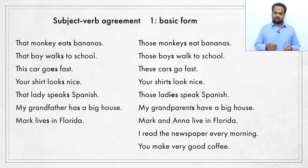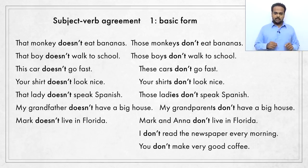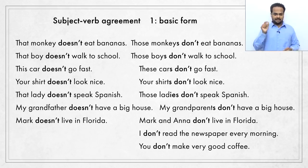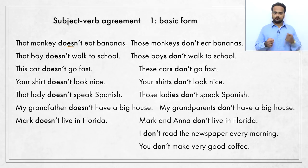The basic subject-verb agreement rule also applies to negative forms. We say 'that monkey does not eat bananas' or 'doesn't eat bananas,' and 'those monkeys do not' or 'don't eat bananas.' It's important to note that we say 'does not eat' — not 'does not eats' — because the S is already added to the helping verb 'do,' so there's no need to add it again to the main verb. Remember: to make negative sentences, use 'does not' with singular subjects and 'do not' with plural subjects.